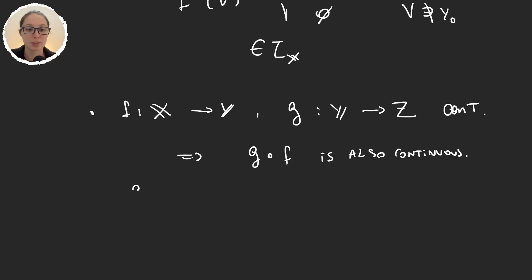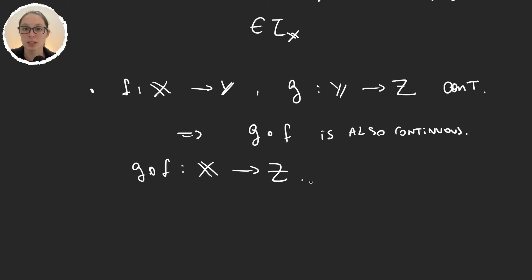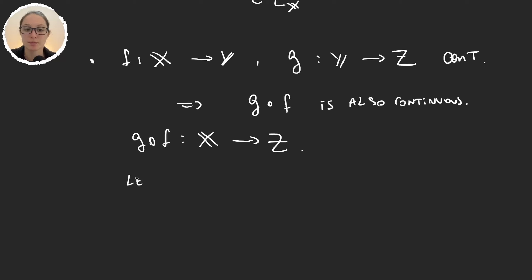g composed with f is a function that goes from x to z. So to see that it's continuous, we should take an open set b in this z topology. And what we want to see is that the preimage of b through the composition is an open set.